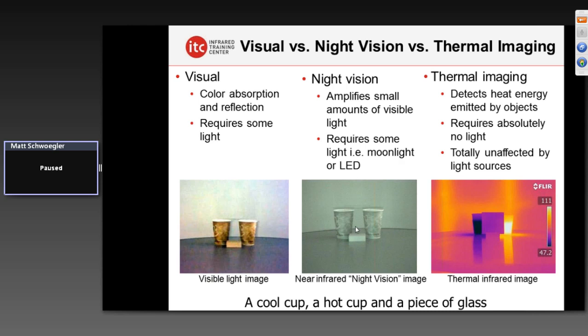Night vision operates in the near-infrared wavelengths of energy — we see the scene because it's being lit by some type of illuminator from LEDs or other low-light ambient light available in the area.